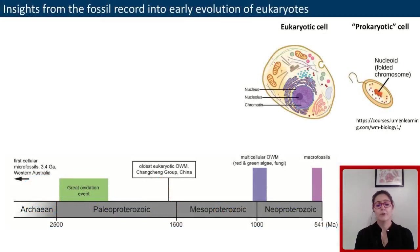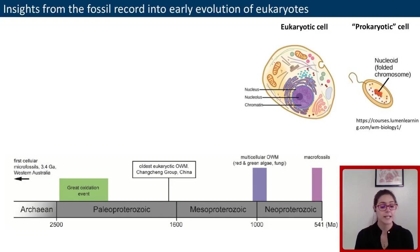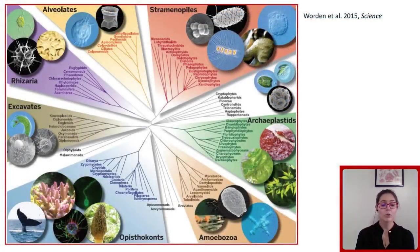The origin of eukaryotes at the end of the Paleo-Proterozoic, seen on this geologic scale with time on the x-axis, is one of the major evolutionary transitions in the history of life. Eukaryotes are one of the traditionally three domains of life, and they differ from bacteria and archaea in having a complex cell and a suite of organelles performing specific functions.